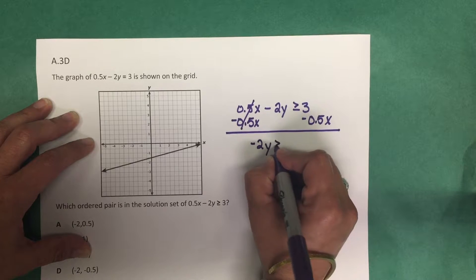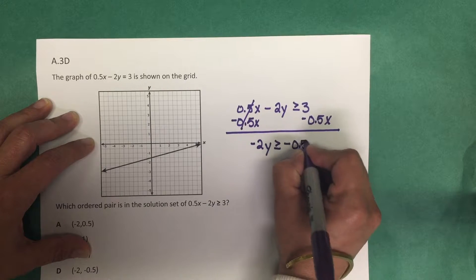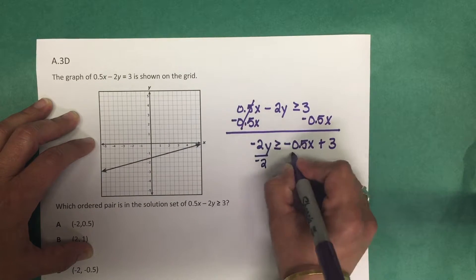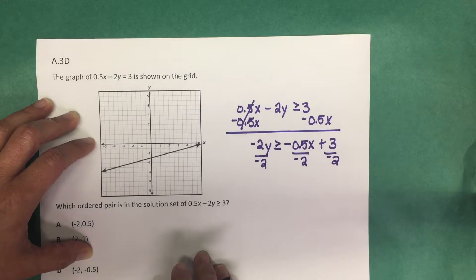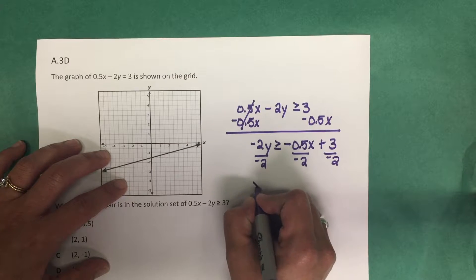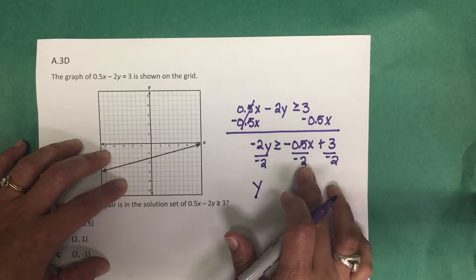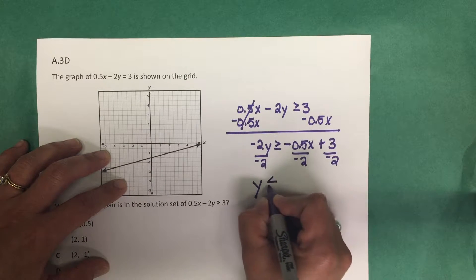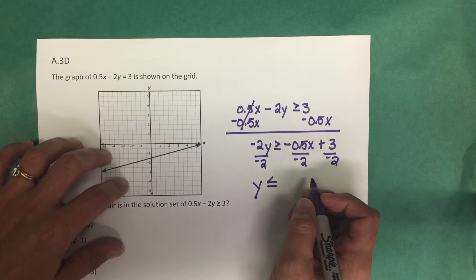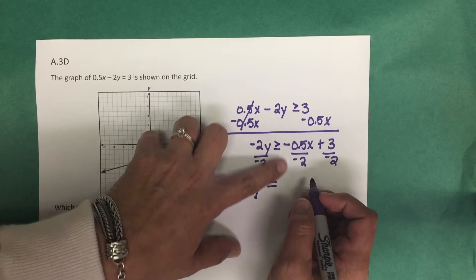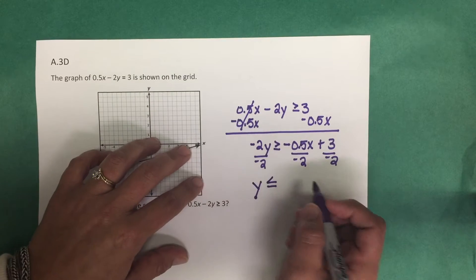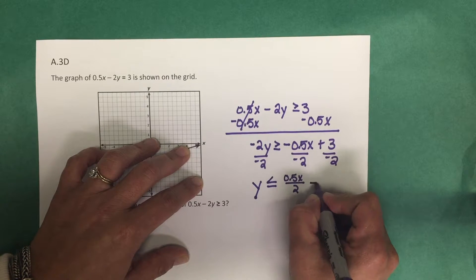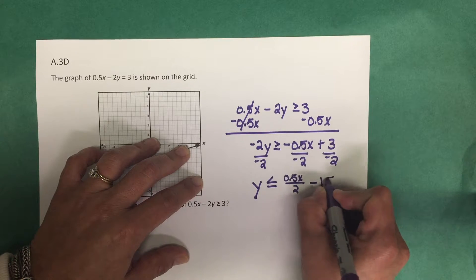That gives us negative 2y is greater than or equal to negative 0.5x plus 3. Now we're going to divide all terms by negative 2 to isolate y. Remember, when we divide an inequality by a negative term we have to reverse the inequality symbol, so this becomes less than or equal to. Dividing gives us 0.5x divided by 2, and 3 divided by negative 2 gives us negative 1.5.